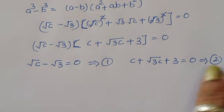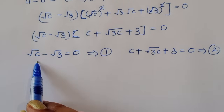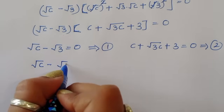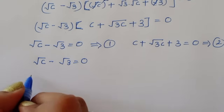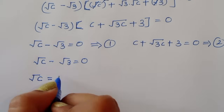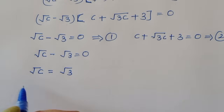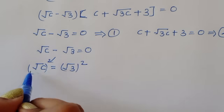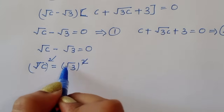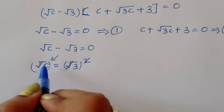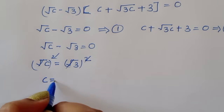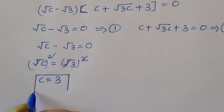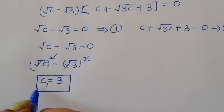Solving Equation 1 first: √c minus √3 equals 0, so √c equals √3. Taking squares on both sides, the squares cancel with the square roots, giving c equals 3. So c₁ equals 3 is the first value of c.